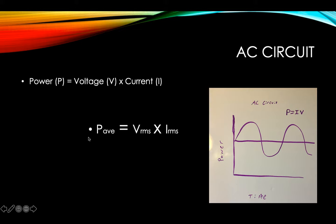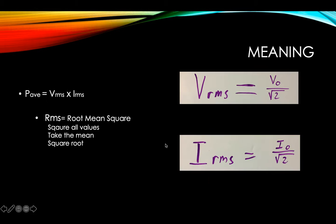So we're given this equation — it's the same equation: power equals voltage times current. However, to get a correct, accurate average of power, we need to take the root mean square values of the voltage and multiply it by the root mean square values of the current. So what does root mean square mean? The RMS value means root mean square.